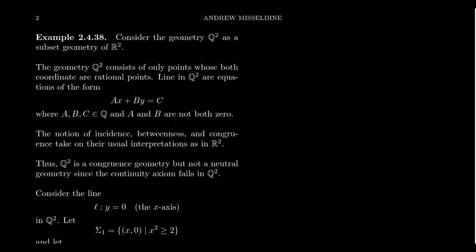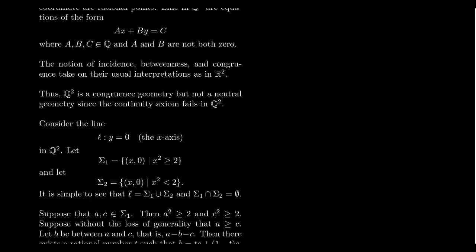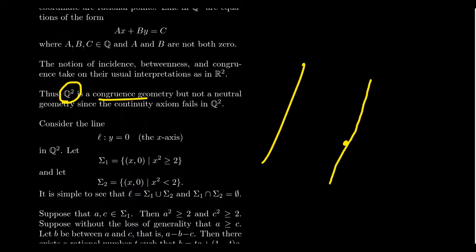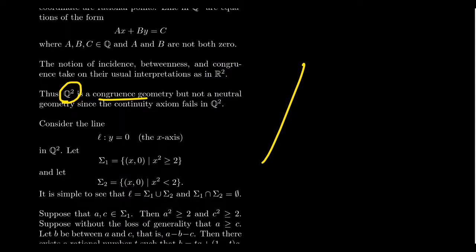Q² also satisfies the Euclidean parallel postulate. If you have a rational line and a rational point off that line, there will exist one rational line that passes through it. These lines and points are subsets of the Euclidean plane, so you can't have more than one parallel line. In the Euclidean plane, two lines are parallel if and only if they have the same slope — and for a rational line, the slope has to be rational. So there will be a rational line with that slope. The Euclidean parallel postulate is satisfied.